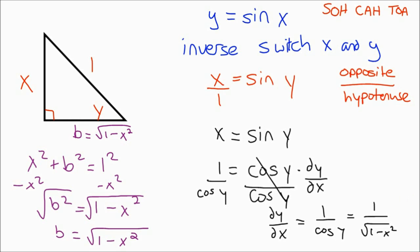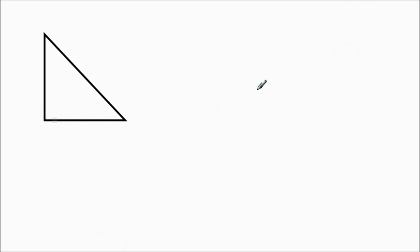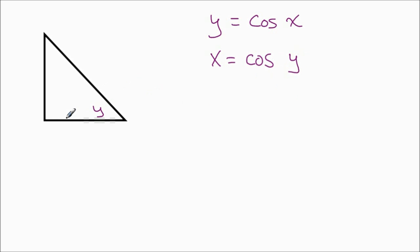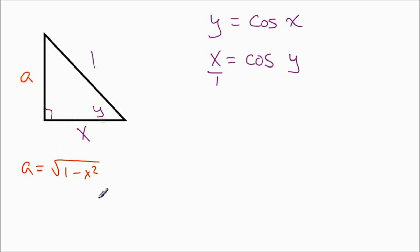You can apply this same method for cosine and tan. Let's say our function starts as y equals cosine x. Again, to find the inverse, we switch x and y to get x equals cosine y. We label the angle y and draw our right triangle. Cosine is adjacent over hypotenuse, so this is x over 1 — adjacent is x, hypotenuse is 1. Using Pythagorean theorem, the opposite side works out to be the square root of 1 minus x squared.